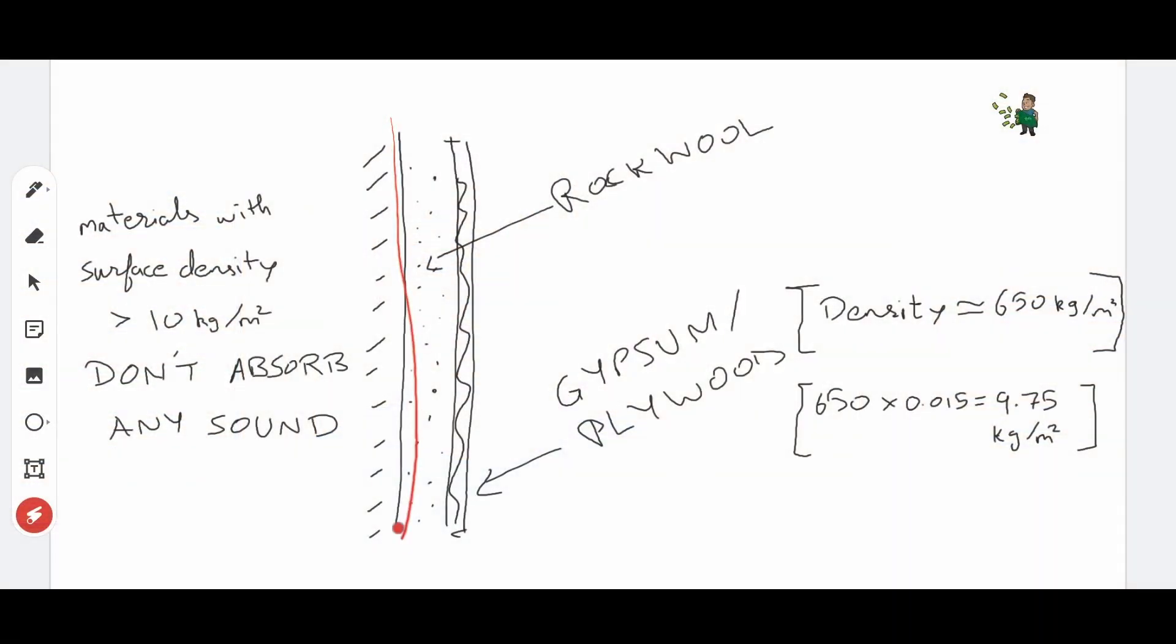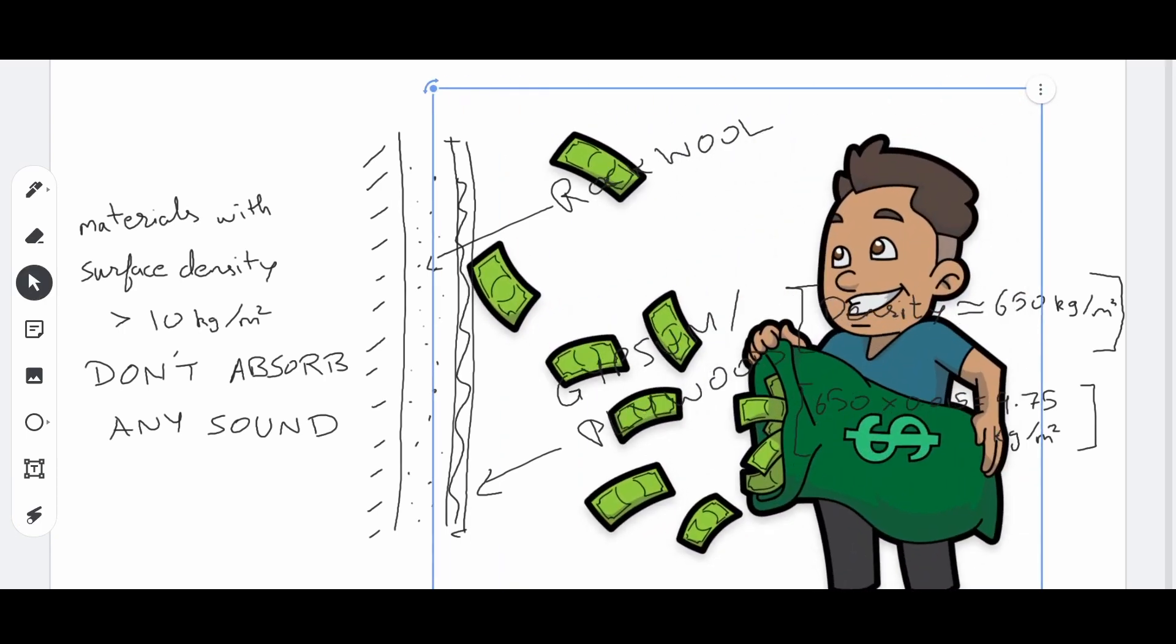Additionally, sound absorption mechanisms differ for different frequency bands. Now imagine installing a framework on walls, inserting rock wool and then later applying an 18 mm plywood board on top of that and calling that a sound absorbing panel. It should be called a money waste panel.